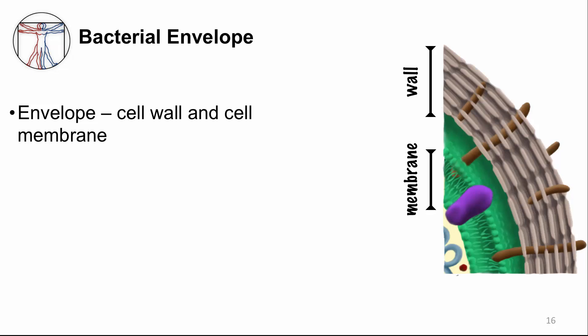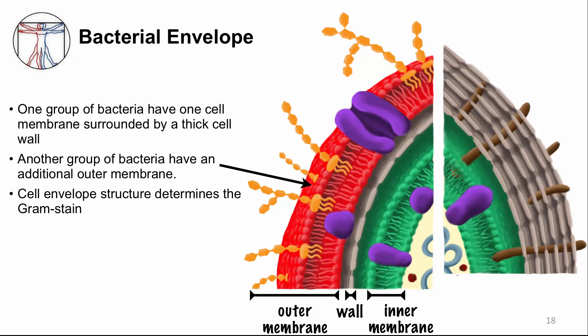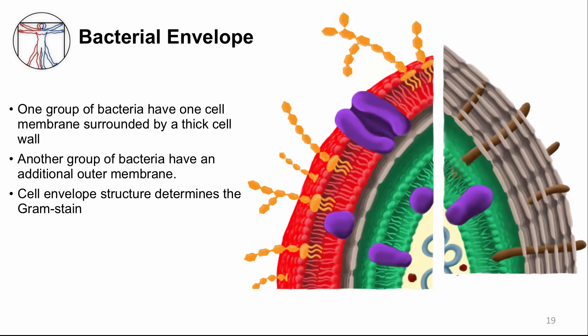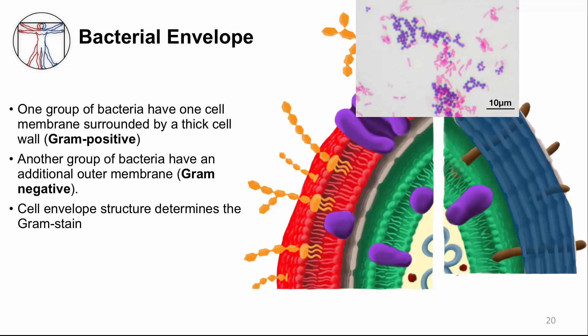The cell wall and the cell membrane together are called the cell envelope. One group of bacteria has a cell membrane surrounded by a thick cell wall, and a second group evolved a second, outer membrane that surrounds a thin cell wall. These two groups can be distinguished by a very common microbiological stain used in the clinic called the Gram stain. Gram-positive bacteria have thick cell walls that retain the purplish stain, while Gram-negative bacteria stain poorly and remain pink.